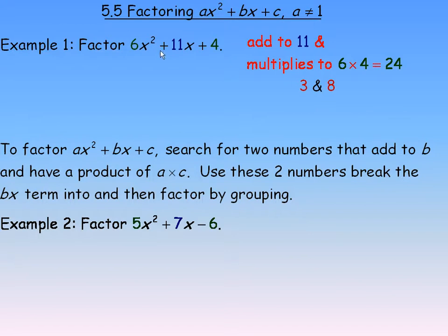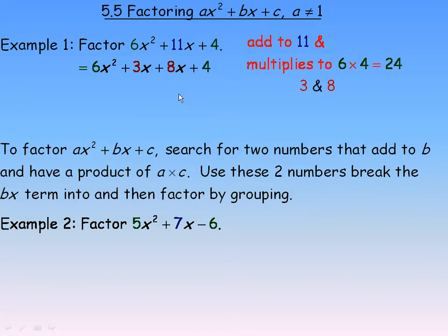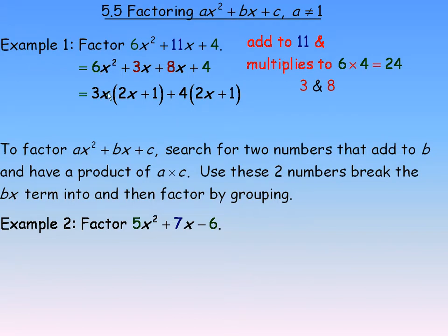What you do with the 3 and the 8 is rewrite this trinomial with the quadratic term the same. But instead of 11x, we break that down into 3x plus 8x — that is what the 3 and 8 are used for. The constant 4 stays the same. Now look for the common factor in the first two terms and the last two terms. The common factor of the first two terms is 3x, and the last two terms have a common factor of 4. Factoring 3x out of the first two: 6x squared divided by 3x is 2x, and 3x divided by 3x is 1. Factoring 4 out of the last two: 8x divided by 4 is 2x, and 4 divided by 4 is 1.